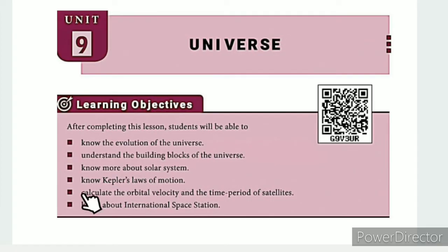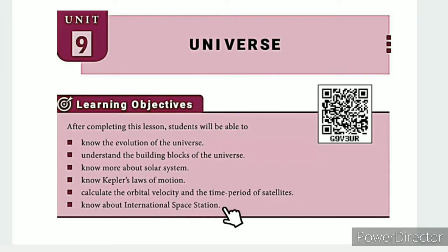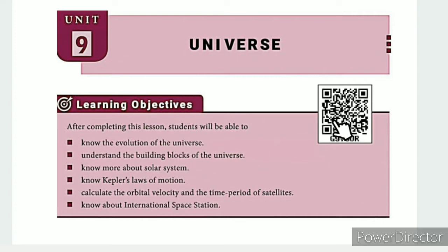Know more about the solar system. Know Kepler's laws of motion. Calculate the orbital velocity and the time period of satellites. Know about the International Space Station. This lesson includes a QR code and ICT corner link.